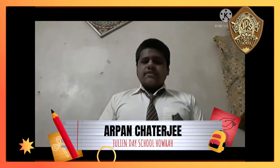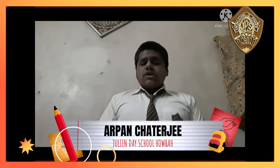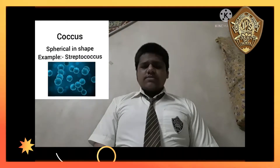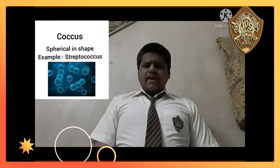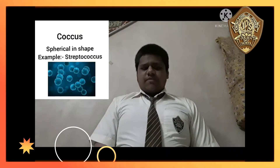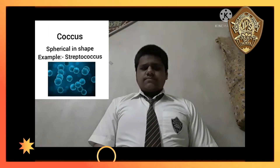I am Arpan Chatterjee of Class 7 and today I am going to tell about the different shapes of bacteria. The first type of bacteria is Coccus. They are spherical in shape. For example, Streptococcus.